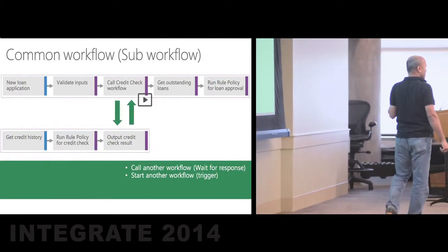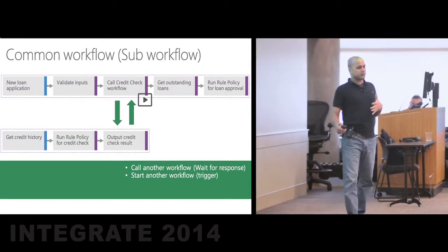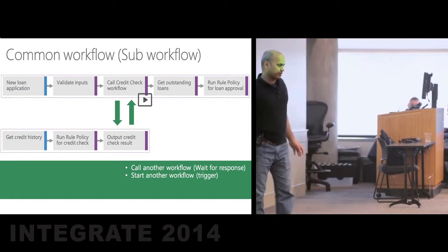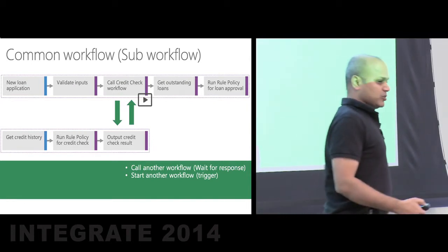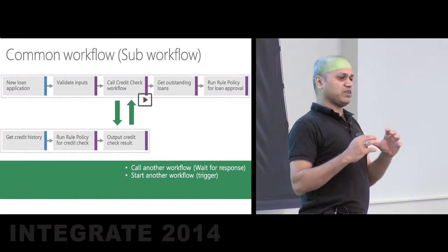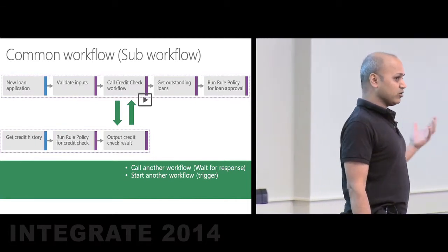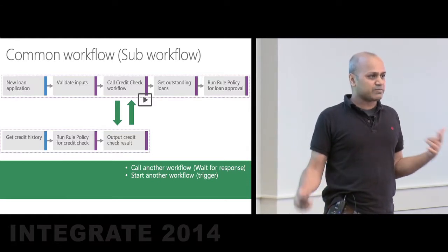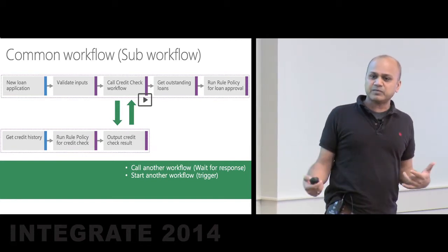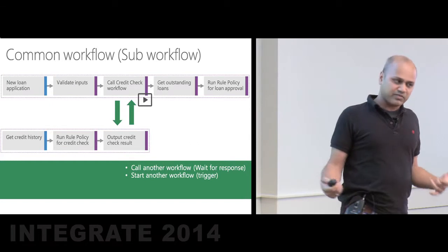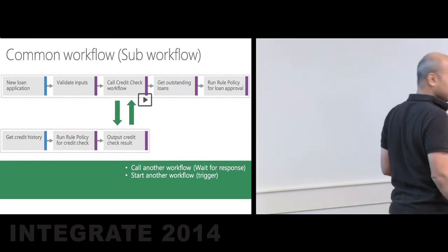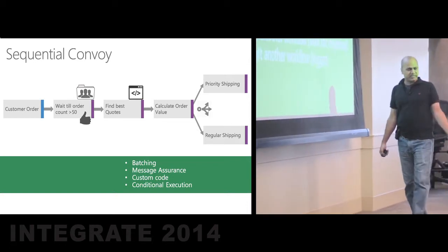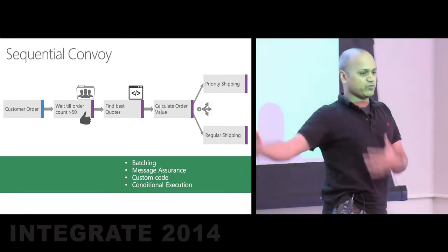The next pattern is a common workflow. In most enterprises, certain processes are common across the organization — like running a credit check. Your loan approval process would need it, and any other business process could call into it. I should be able to change my credit check policy in one single place, and everybody who depends on it would benefit. The requirement here is: you shall be able to call another workflow in two fashions — either wait for the response before moving on, or trigger it and not wait for it to finish.